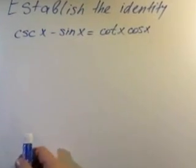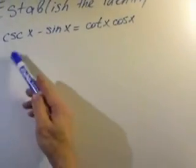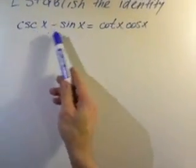First, I am going to rewrite cosecant x as a reciprocal of sine.